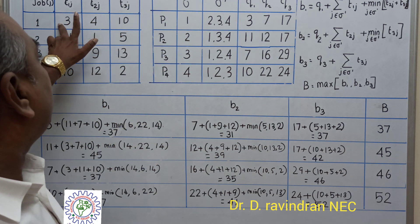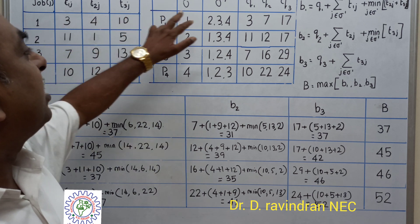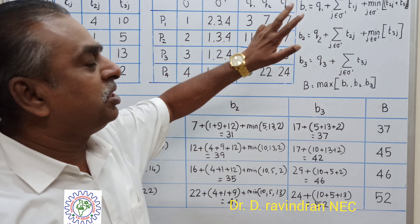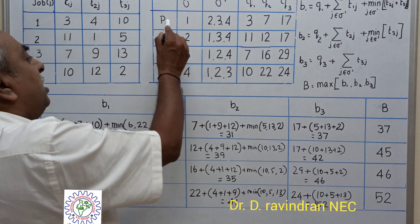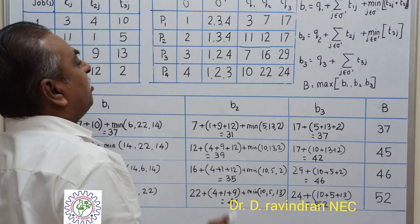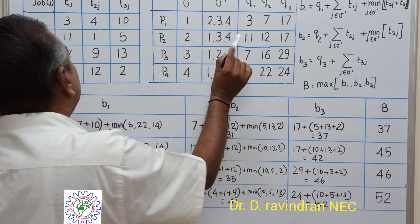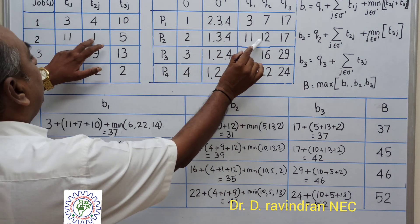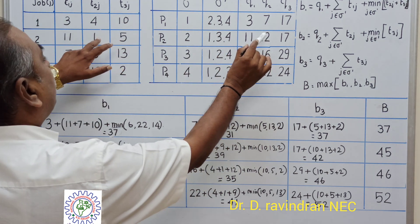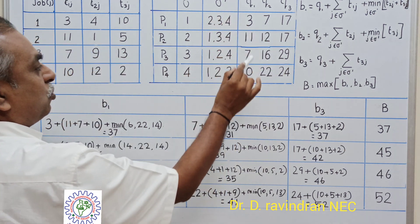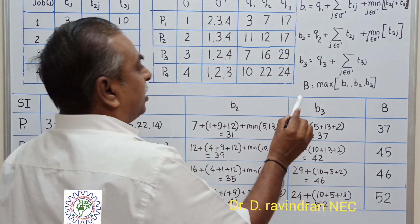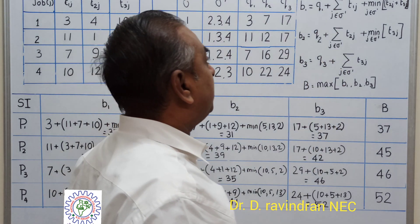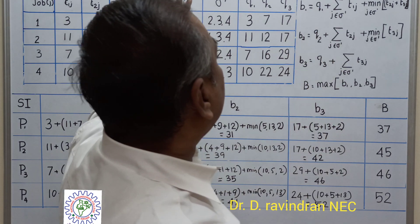So the completion times at machine M1, M2, and M3 are 3, 7, and 17 when job one is processed first. Similarly, we compute the completion times for all other jobs. For P2 (job two first): 0+11=11, then 11+1=12, then 12+5=17, and so on.